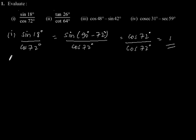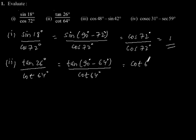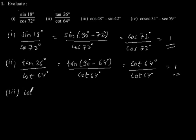The second part: tan 26 degree divided by cos 64 degree. This can be written as tan (90 degree minus 64 degree) divided by cos 64 degree. So tan (90 degree minus 64 degree) becomes cot 64 degree divided by cos 64 degree, which is equal to 1.